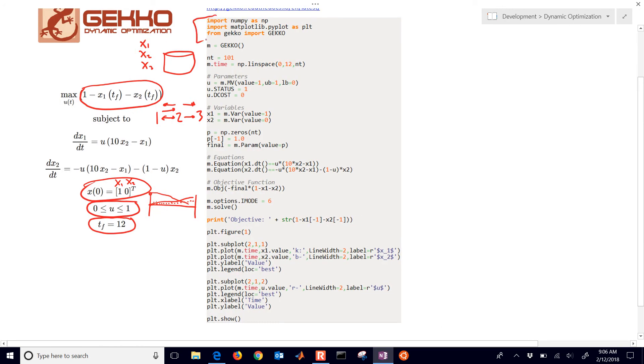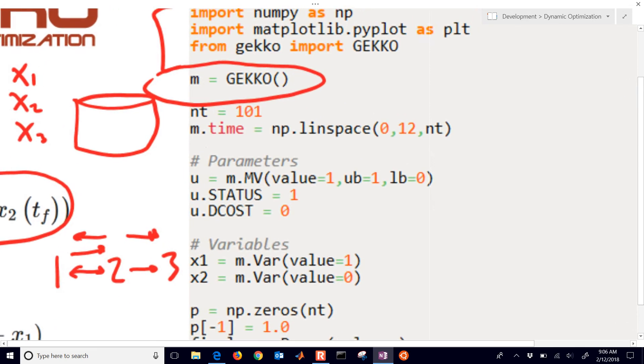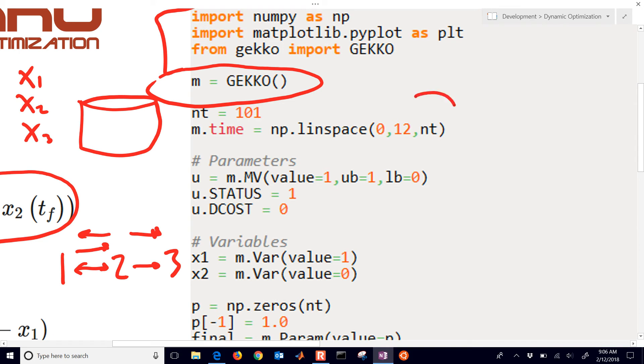You would first of all need to just import some packages. Define your new model right there. I'll zoom in just a little bit as we go through it. Here are our time points. These are going to be delta t equals 0.01.